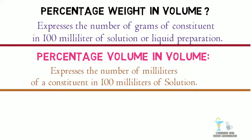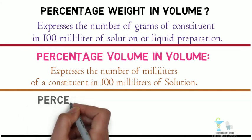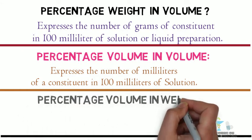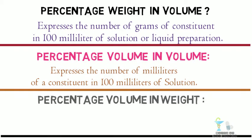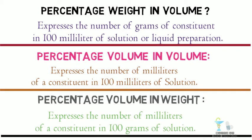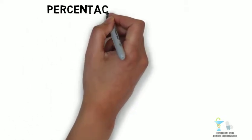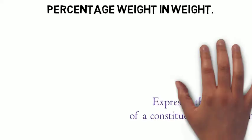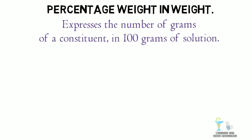Percentage volume in volume expresses the number of milliliters of a constituent in 100 milliliters of solution. Percentage volume in weight expresses the number of milliliters of a constituent in 100 grams of solution. Percentage weight in weight expresses the number of grams of a constituent in 100 grams of solution.